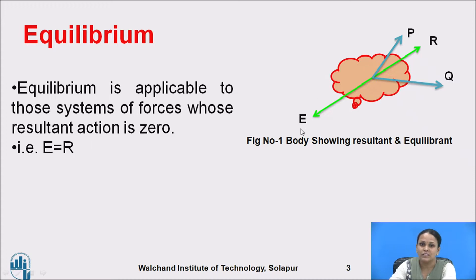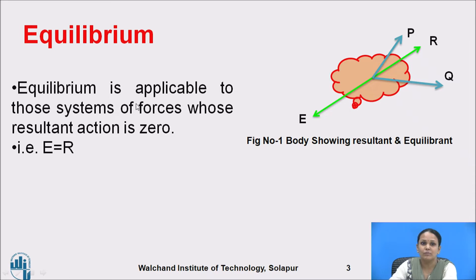E is the equilibrium force which is equal and collinear but acts in the opposite direction to the resultant force. So the equilibrium is applicable to those systems of forces whose resultant action is zero.